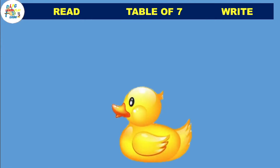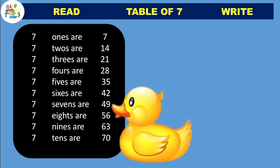Table of 7! Wow, Duck will help us to learn table of 7. Let's start. 7 one's are 7, 7 two's are 14, 7 three's are 21, 7 four's are 28, 7 five's are 35, 7 six's are 42, 7 seven's are 49, 7 eight's are 56, 7 nine's are 63, 7 ten's are 70.